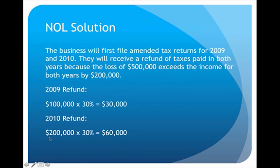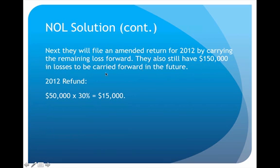In 2012 the business returned to profitable operations and made $50,000, so they would normally owe $15,000 in taxes — but by carrying the NOL forward, they won't have to pay that $15,000. That still leaves $150,000 remaining to carry forward for the next 19 years into the future.